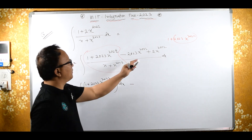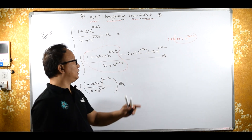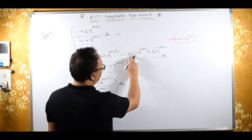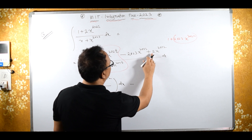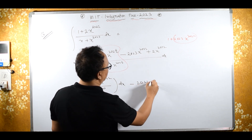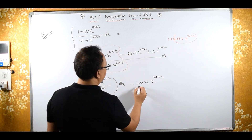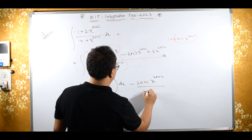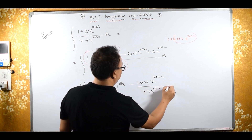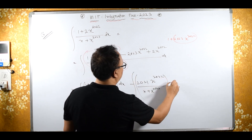Now, here this x raised to 2023 — if I take x raised to 2023 common, now what I get is 2023 minus 2, means I will get 2021 x raised to 2022. Now I am separating this upon this. Here I will get x plus x raised to 2023 integral dx.